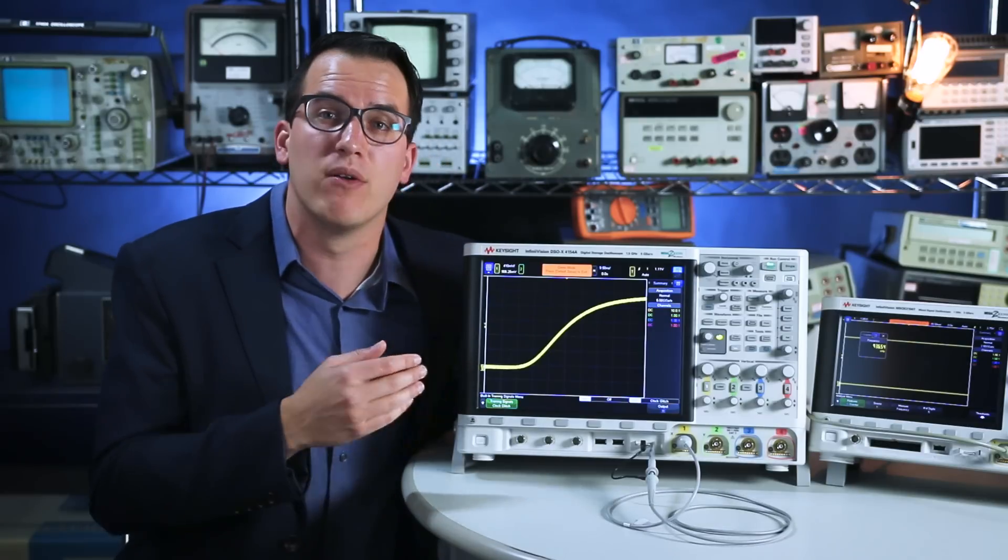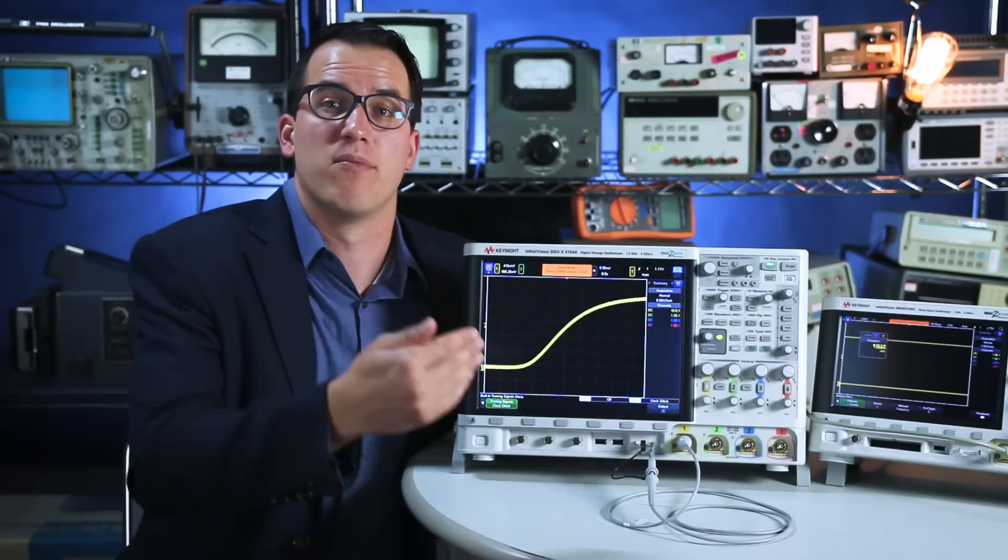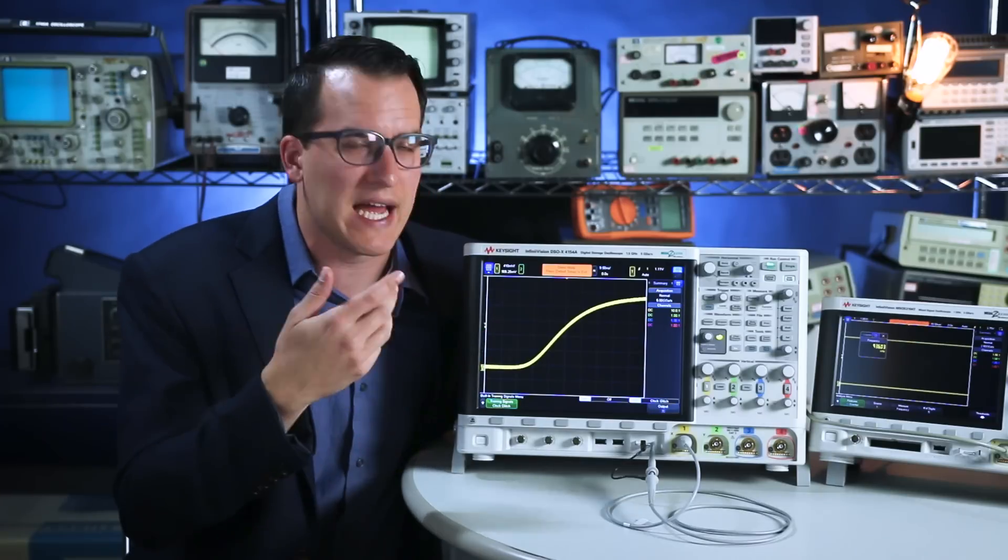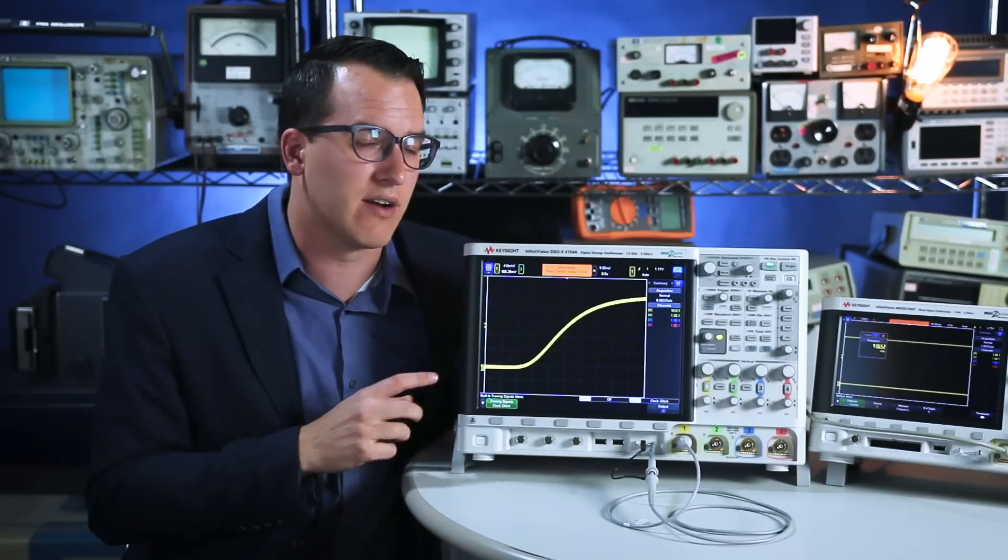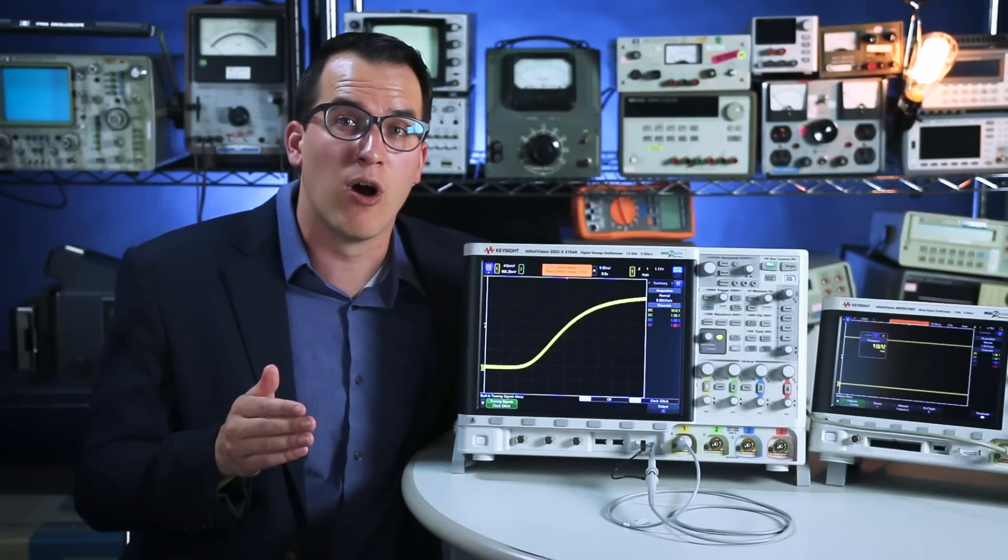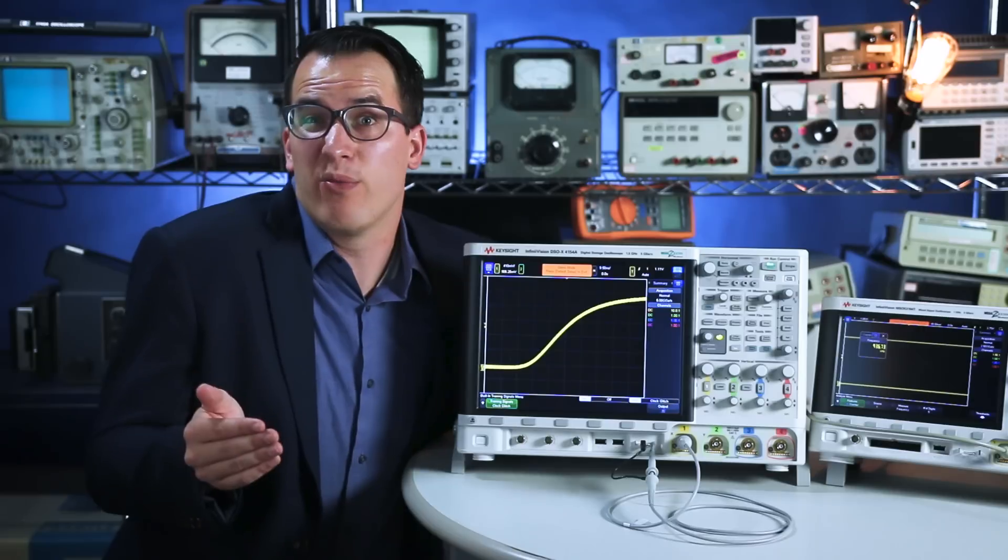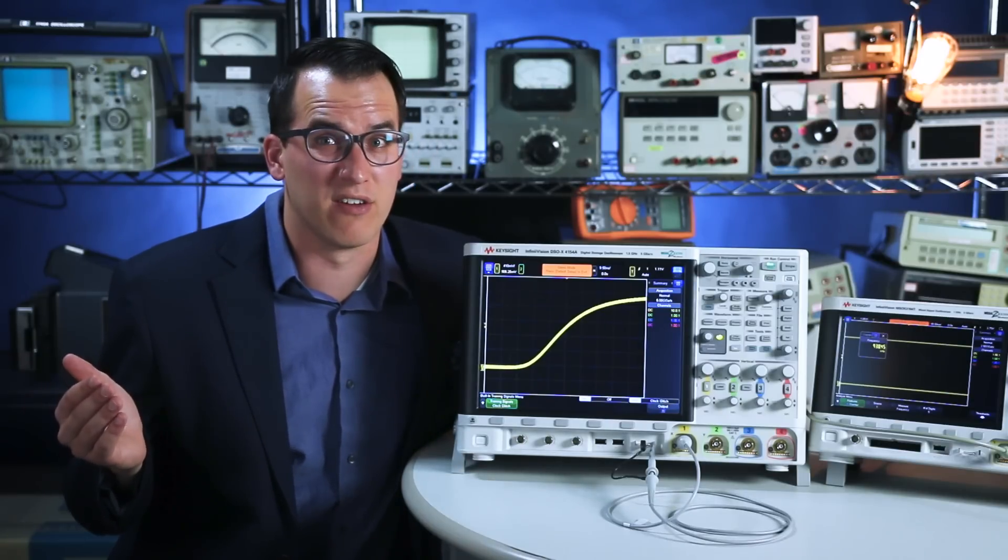If this glitch is happening once per second and once every million waveforms, I'm able to see it once per second because I have 1 million waveforms per second on this scope. But if my scope was maybe 100 waveforms per second, how long is it going to take you to see that signal?